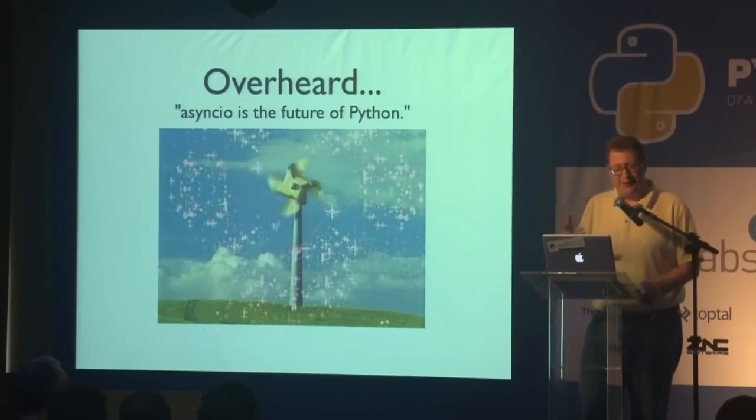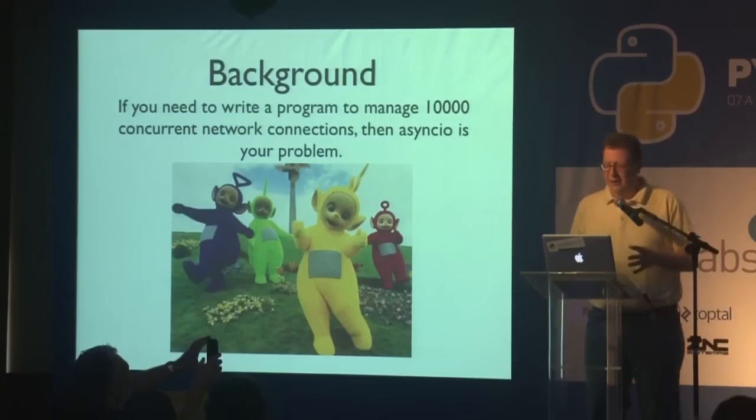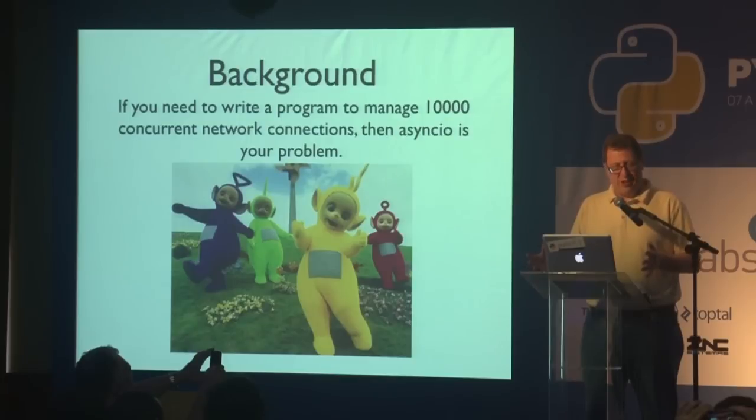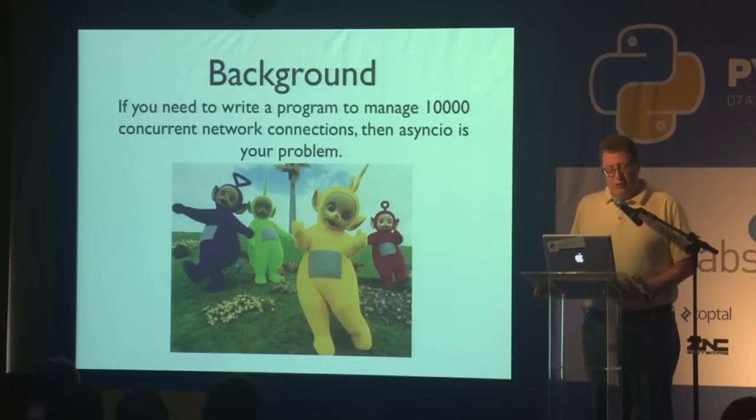The thing I'm going to talk about is async IO. A comment I heard recently: 'async IO is the future of Python.' Maybe that's a little bit of an exaggeration, but it's an interesting comment. If you have not used async IO before, here's the background on it. Let's say you needed to write a program that managed 10,000 concurrent network connections — how would you do that? There's a lot of people doing things like websockets and lots and lots of connections. That is what async IO is about — you can do that kind of thing.